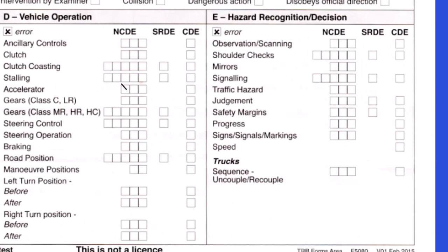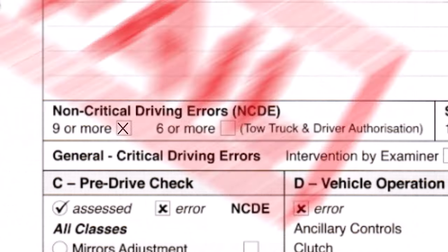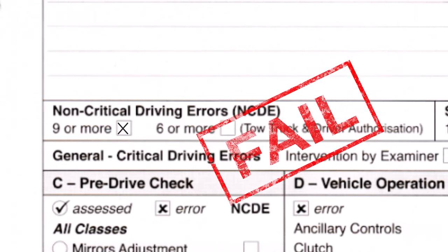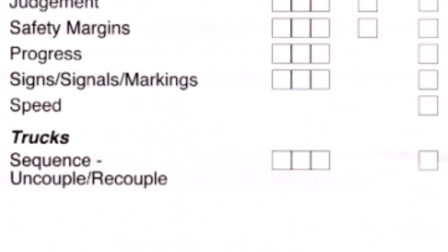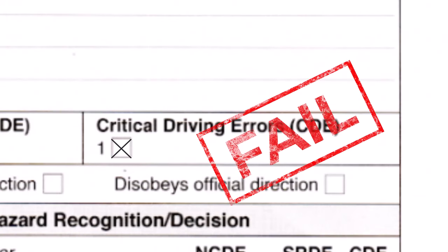If you accumulate minor errors across different criteria — say one here, two there, and so on — and they add up to nine or more, that's also a fail. Up to eight minor errors is still a pass, but nine or more is too many. For speed, there is only one box, meaning there is no second chance: if you go even 61 in a 60 zone, that box is ticked and becomes a critical driving error — an instant fail.